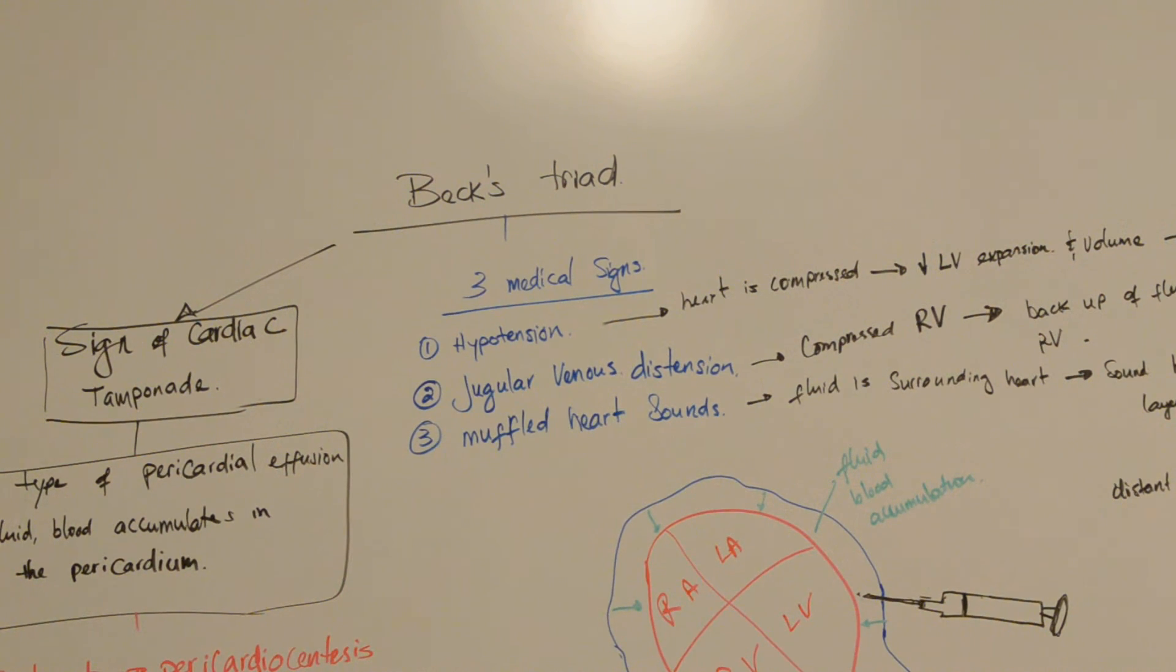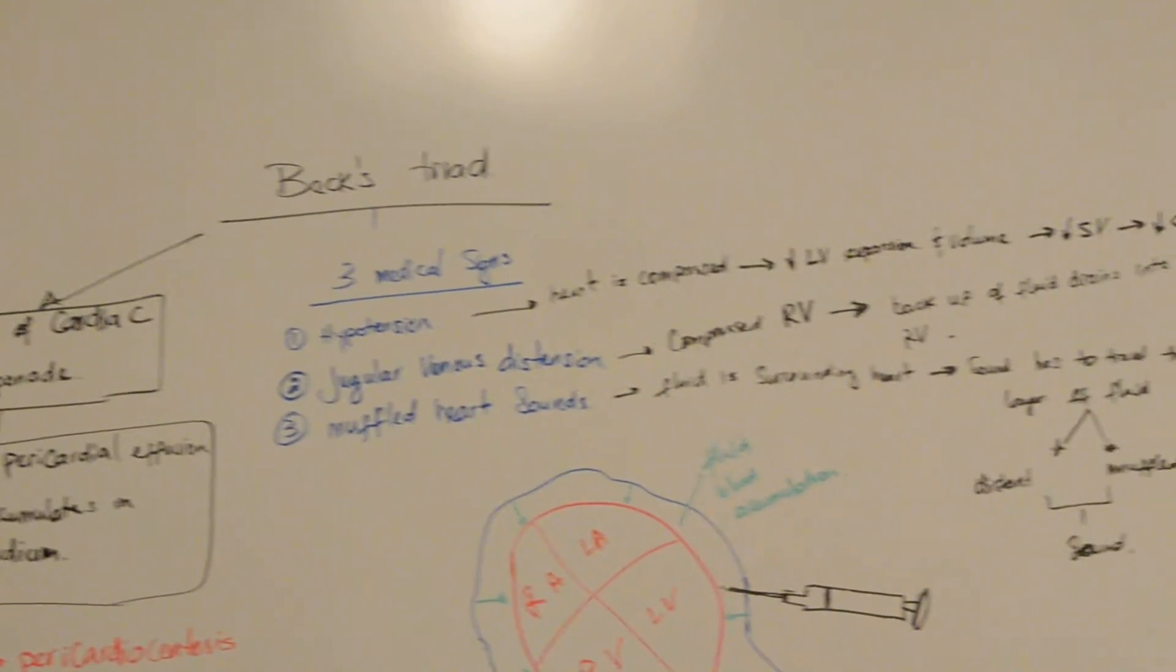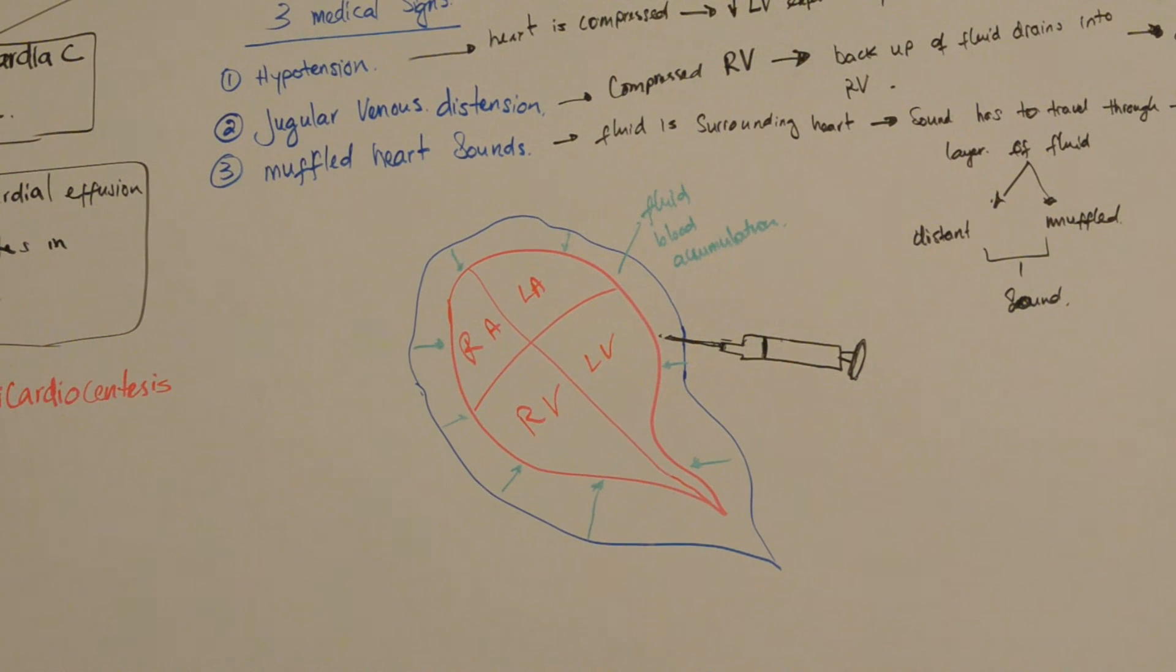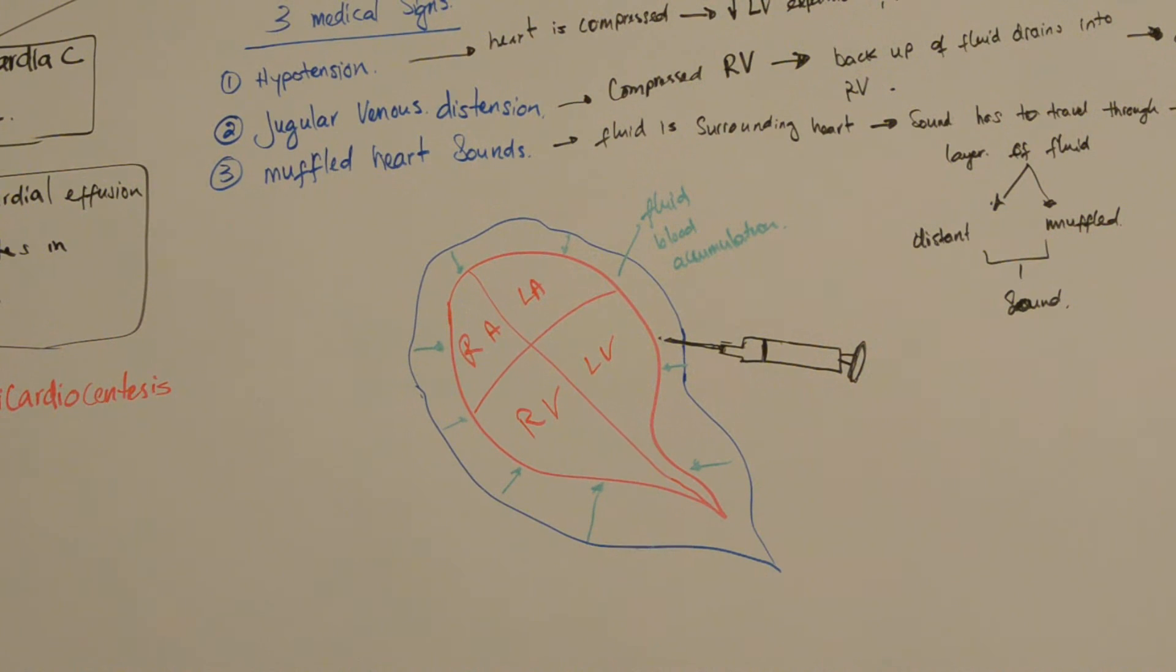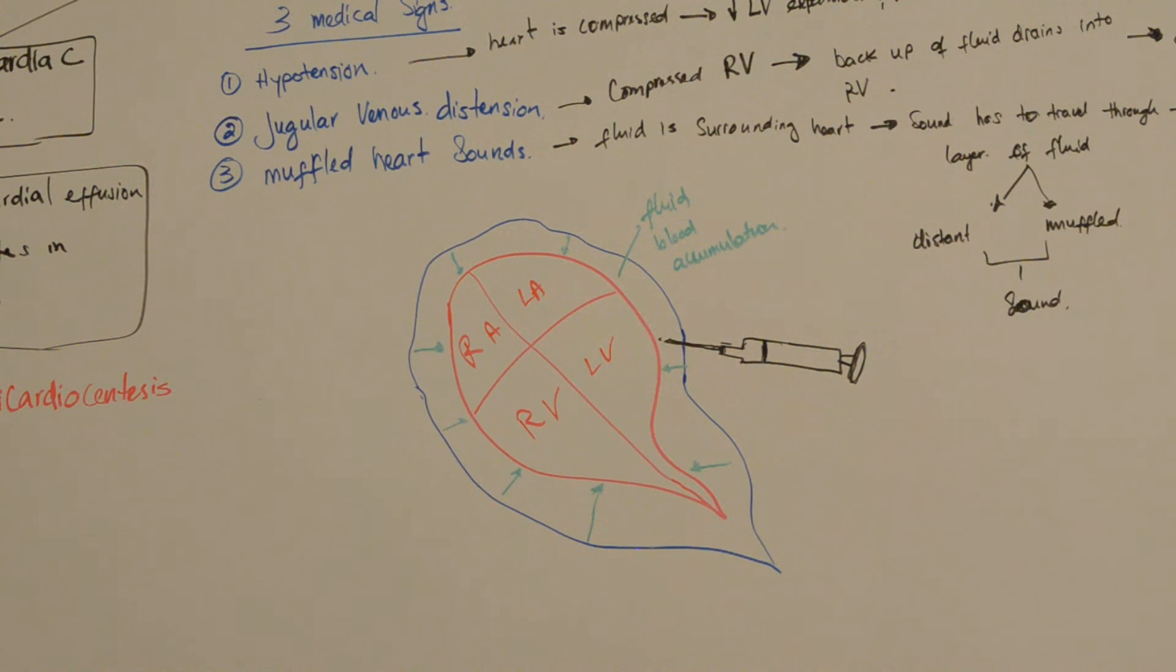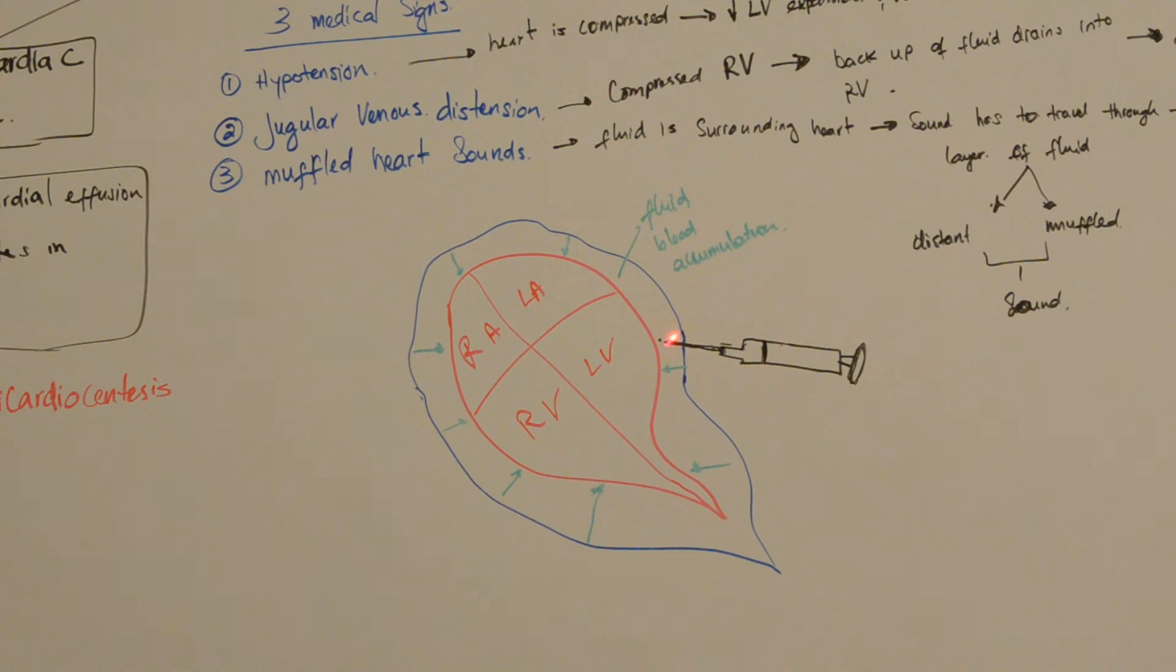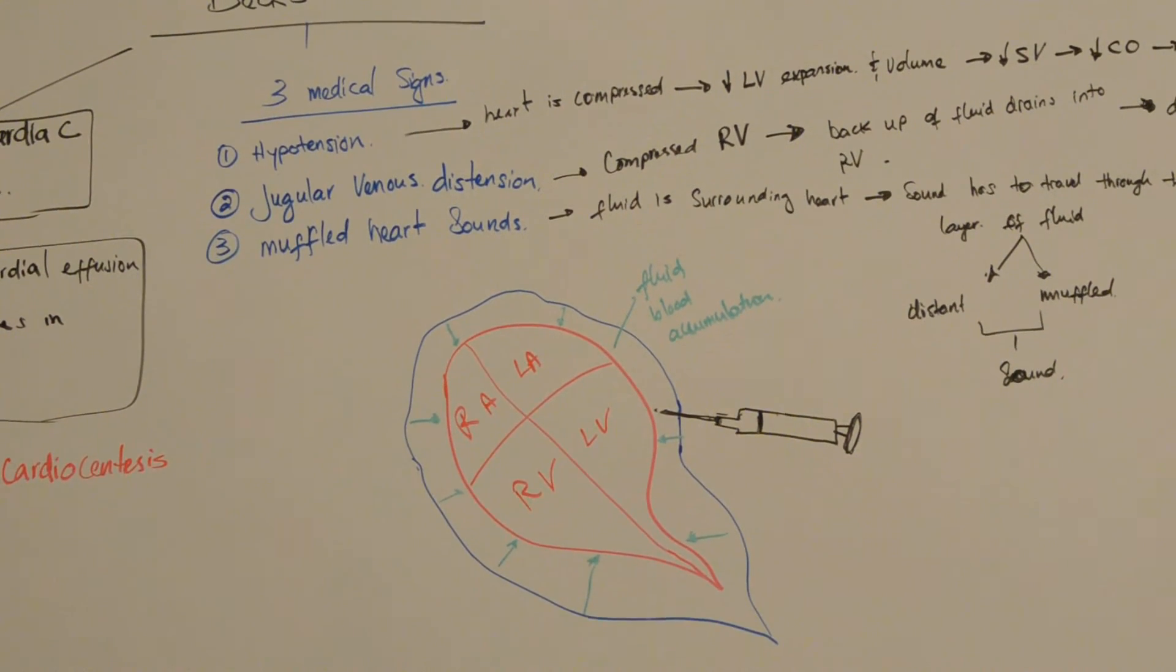The fall in arterial blood pressure results from pericardial fluid accumulation increasing the pressure outside of the heart, as you can see right here. This increases the pressure outside of the heart and limits the maximum size the ventricle can stretch to. Because there's increased pressure here, the left ventricle won't be able to expand as it normally would because of the external pressure exerted by the fluids that accumulate in the pericardium.